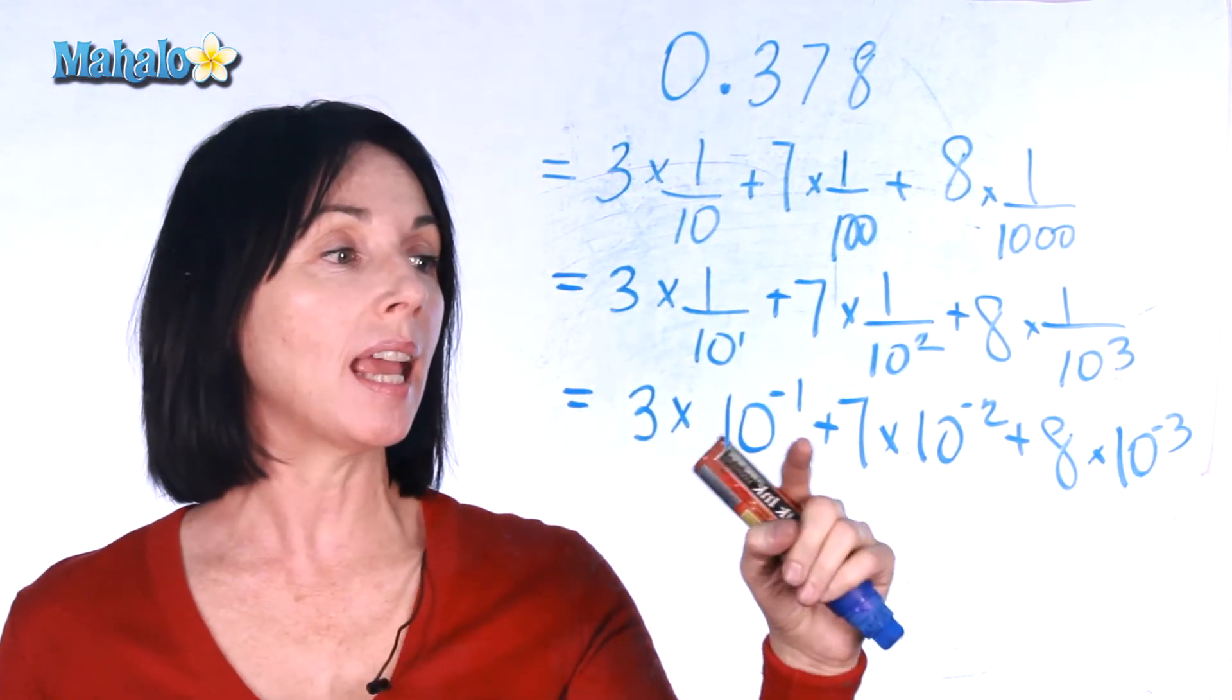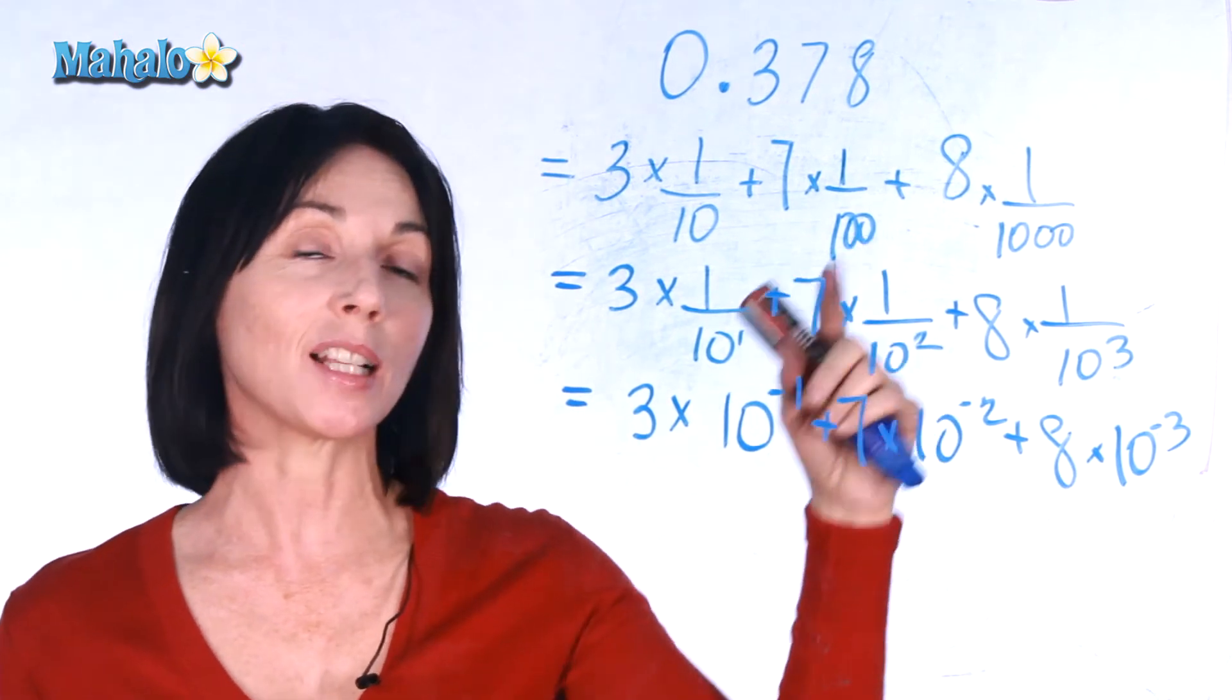And that's how you use negative exponents to write a decimal in expanded form.